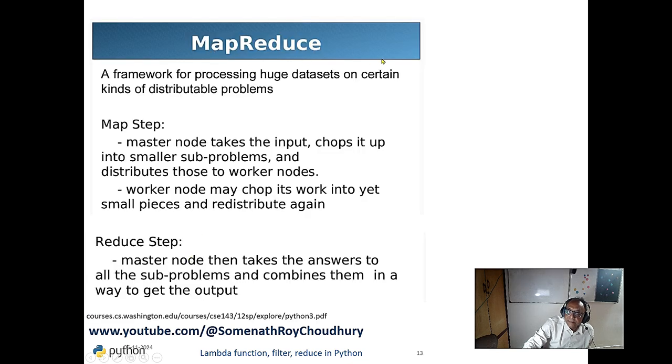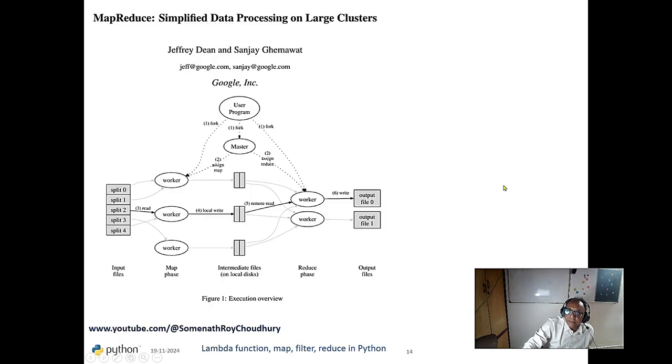This is the algorithm map reduce. The map step and reduce step. This is Google, they invented it. And the idea of this map reduce functions come from there. Then vice versa.